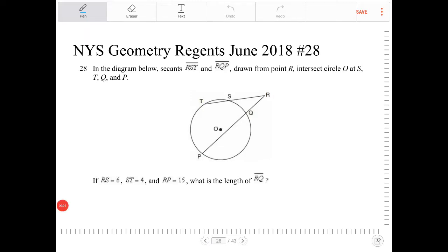In the diagram below, secants RST and RQP drawn from point R intersect circle O at S, T, Q, and P. Okay, so that description is already drawn and labeled in the diagram below.